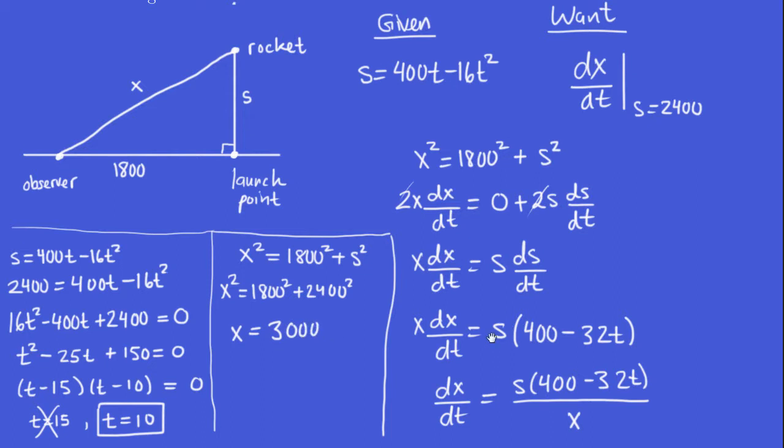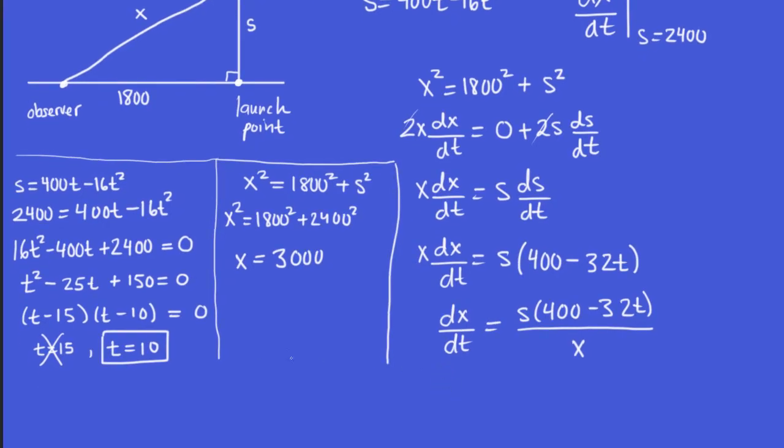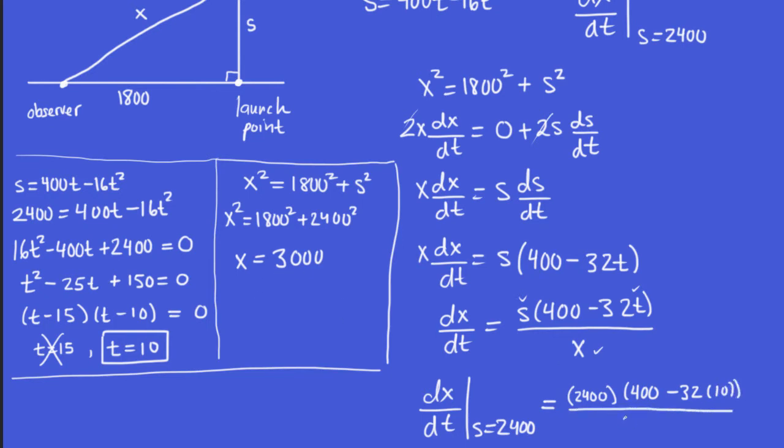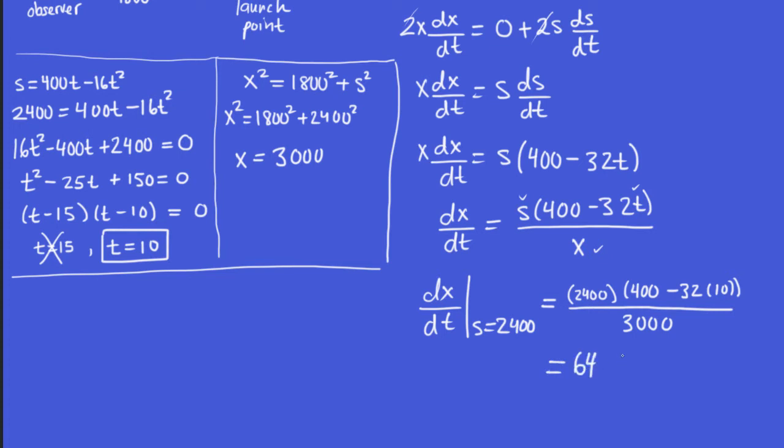And now we're ready to go. So let's remember what we want: we want dx/dt when s is 2,400. Here's our formula for dx/dt. So we would like to find out what dx/dt is when s is 2,400. And after all our work, we have something to plug in for each of these three variables here. s is 2,400, then 400 - 32 times t, which is 10, all over the value of x, which is 3,000. And if we type that all in, it turns out to be 64, and the units on that is feet per second. And that's our answer. That's the distance that's changing between the observer and the rocket at this particular point in time.